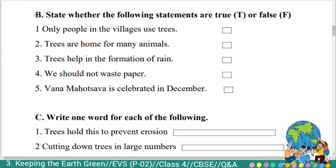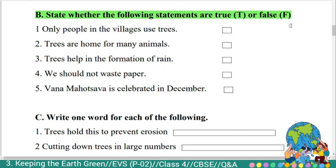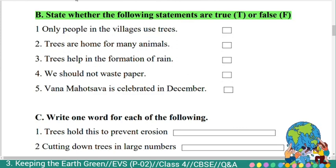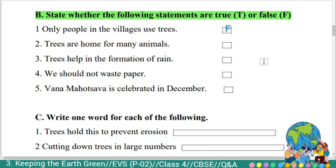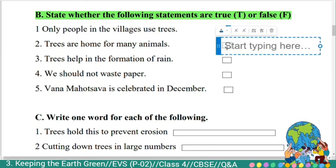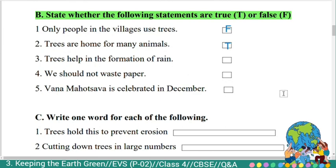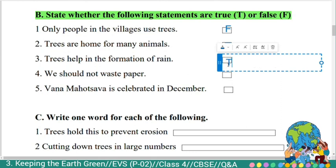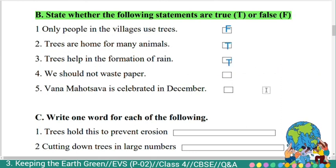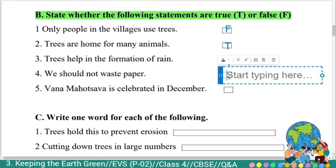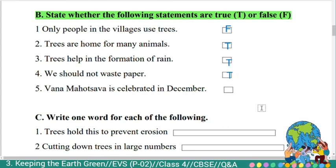Second section: state whether the following statements are true or false. First: 'Only people in the villages use trees.' False. Second: 'Trees are home for many animals.' True. Third: 'Trees help in the formation of rain.' True. Fourth: 'We should not waste paper.' True. Fifth: 'Vanamahatsava is celebrated in December.' False.